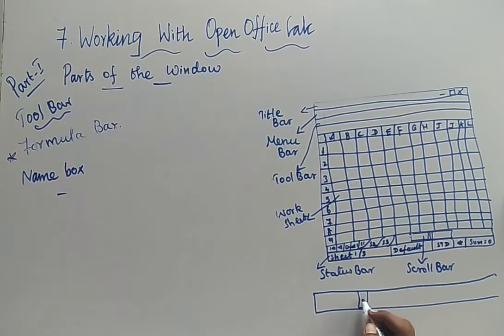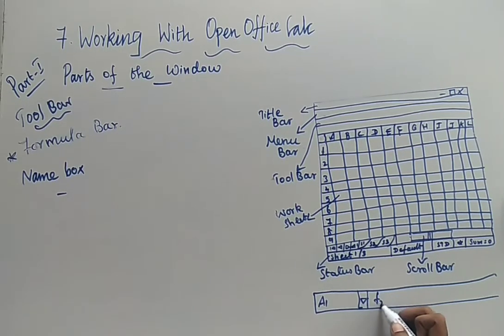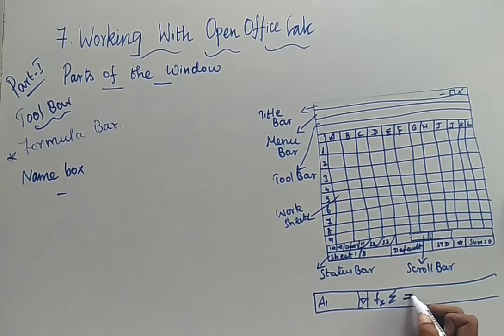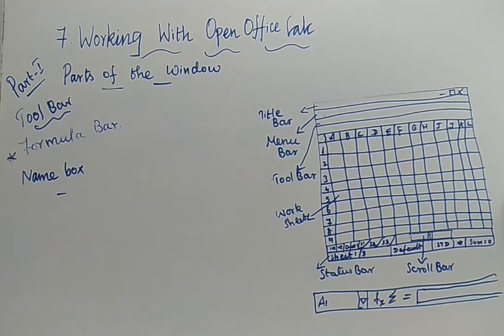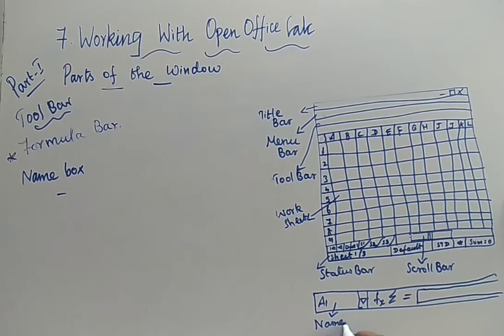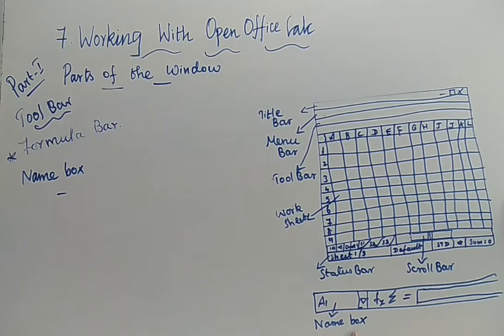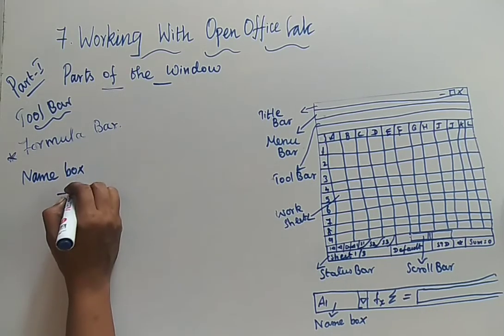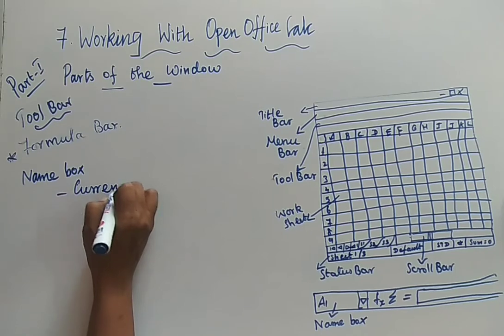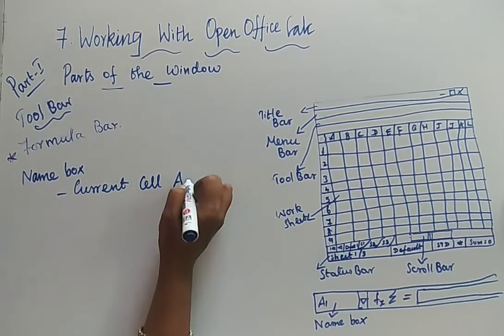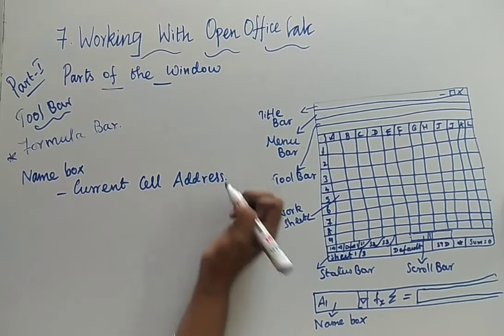This is your simple representation of the Formula Bar — Fx, this is your summation equal to, next is your Input Line. The first one is your Name Box. Name Box is nothing but it is going to have the address of the cell — it is going to display the current cell address. The Name Box is going to display the current cell address. And the next you are having is your Function Wizard.